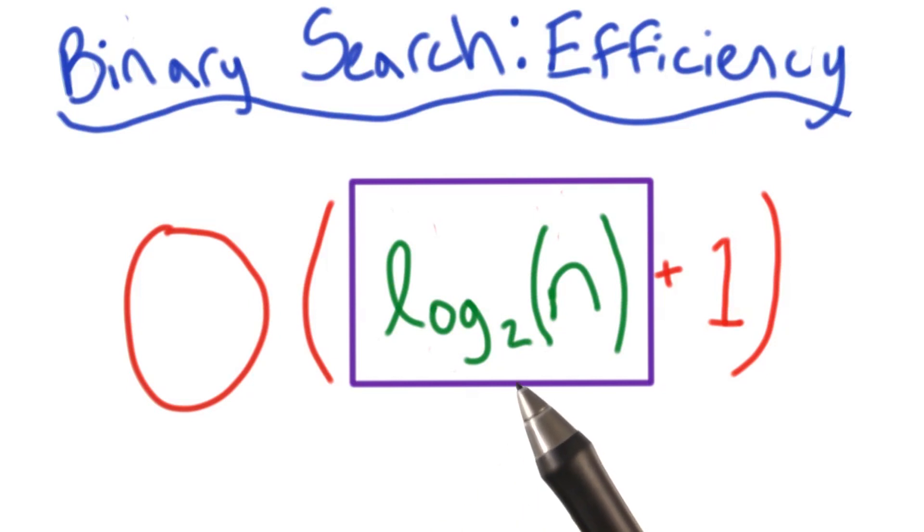Also, I don't really need to say that this is log base 2. In computer science, it's actually pretty safe to assume that your logs are in base 2. We often do things like cut arrays in half or use binary. So our logs are normally going to be in base 2 instead of the typical base 10.